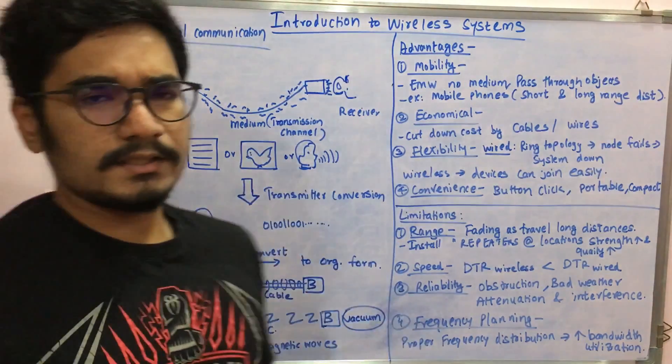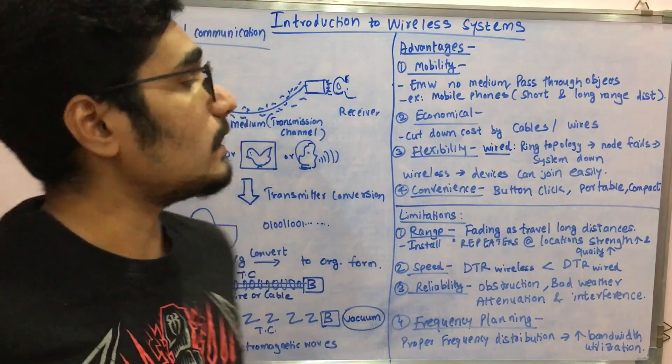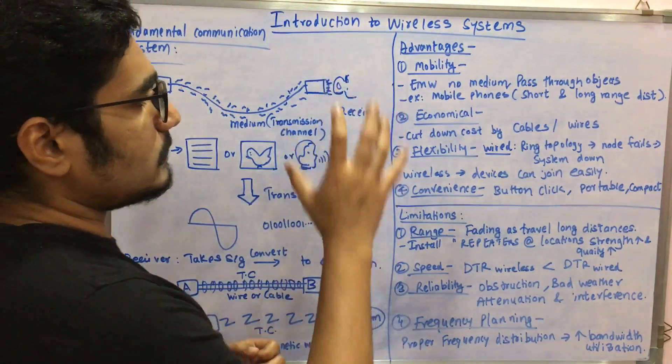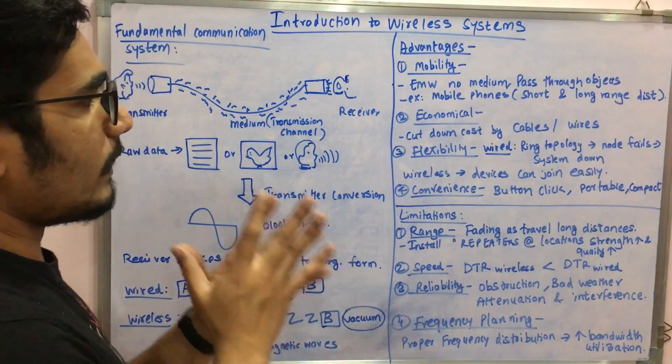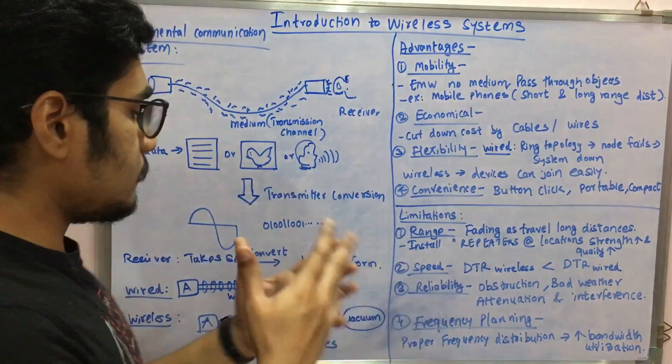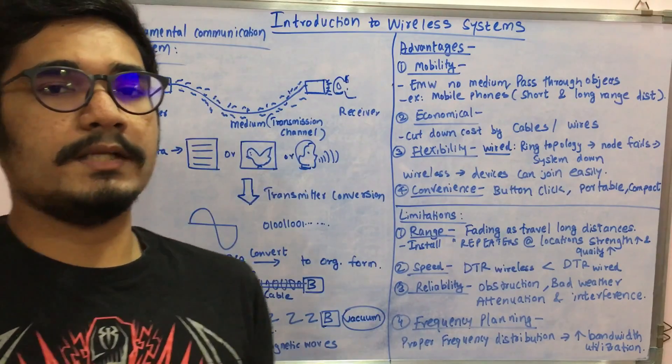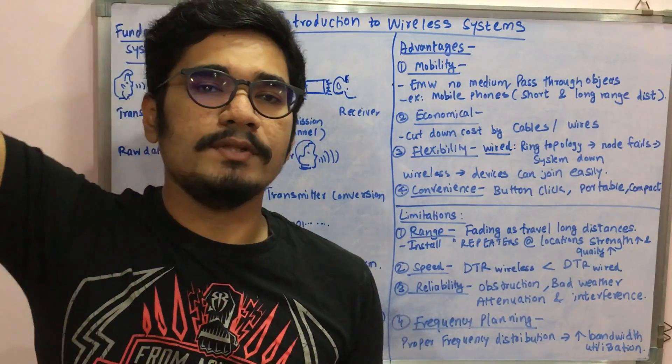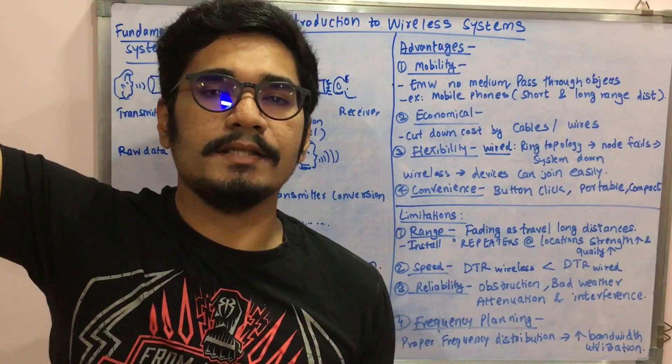Next it has got some certain advantages. The very first advantage is mobility. Since electromagnetic waves require no medium, it can pass through even vacuum also. Like if you imagine if some person is there at Earth and wants to communicate with the person standing at the moon, then he has to lay a physical cable of such a long mission. That would be kind of super imaginary thing which you could ever imagine.